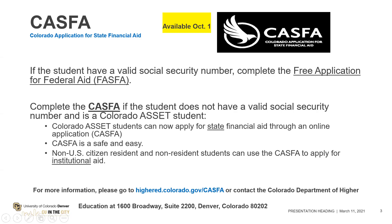Below is the link to the application where the student would go to complete it. Once they complete that form, it will go directly to the financial aid office. This is very similar to the FAFSA application. Like the FAFSA, you can add up to 10 different colleges on the CASFA to receive your information.